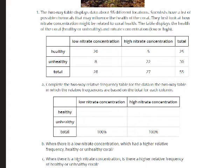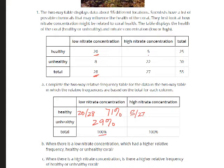What you wanted to do was take each category and divide it by the total for the column. By doing 20 divided by 28, you get 71%. Then in the next one down, you take 8 divided by 28 and you get 29% — those add up to 100. In the column for high nitrate concentration, healthy is 5, so we take 5 divided by 27 and we get 19%. And likewise, 22 divided by 27 is 81%.